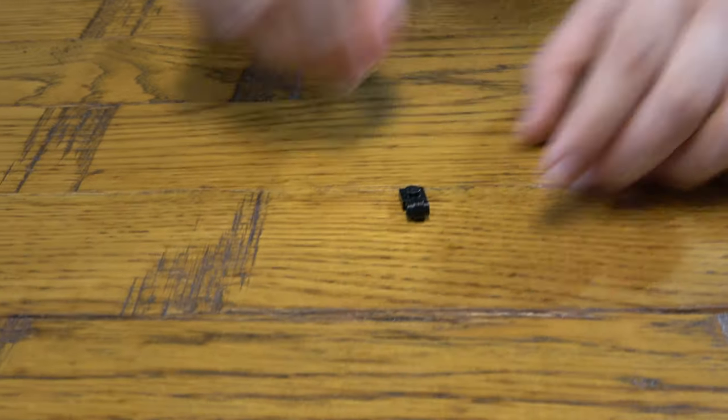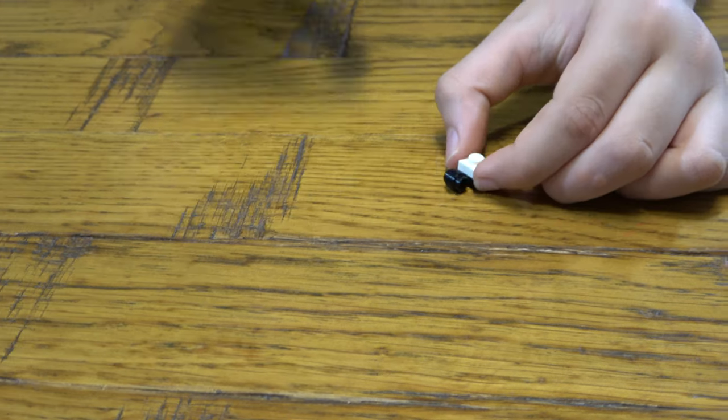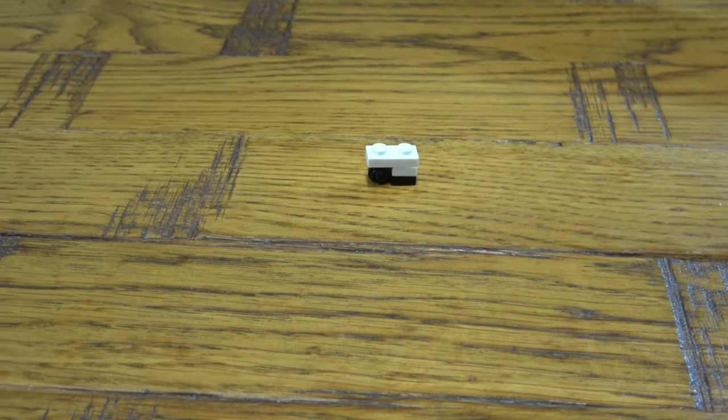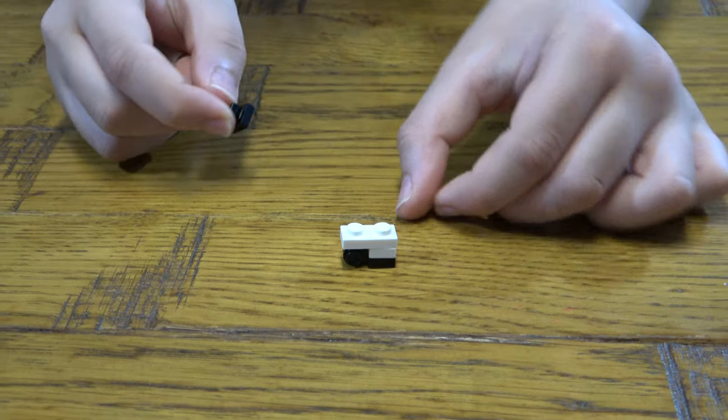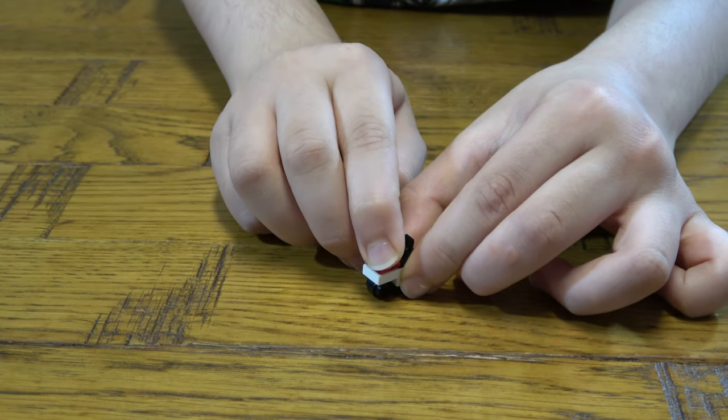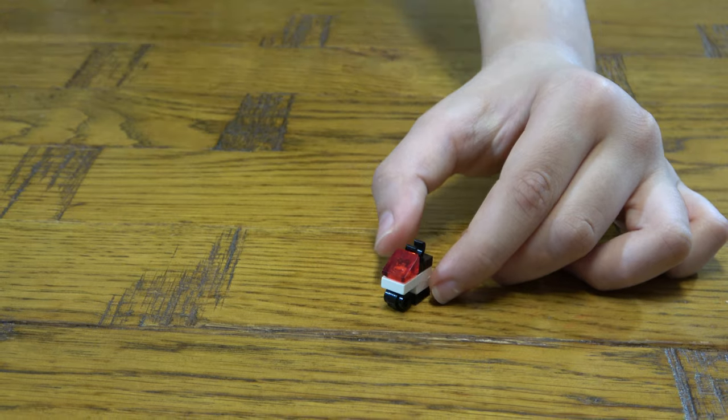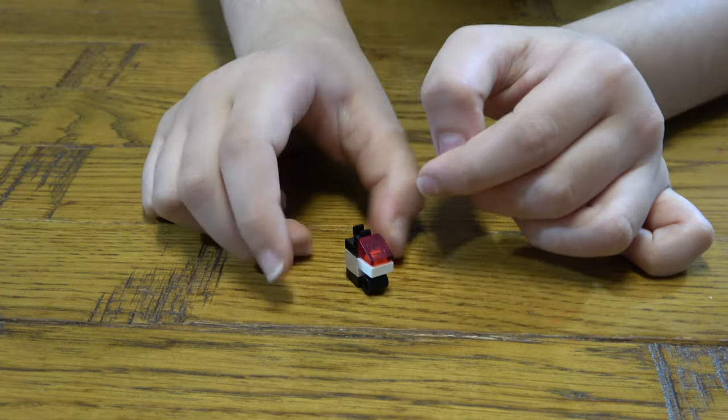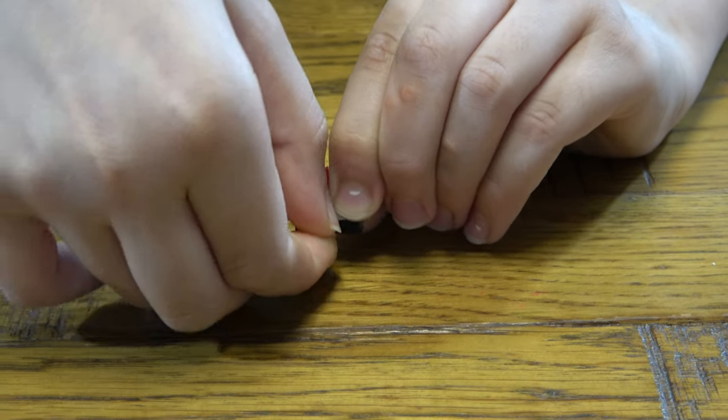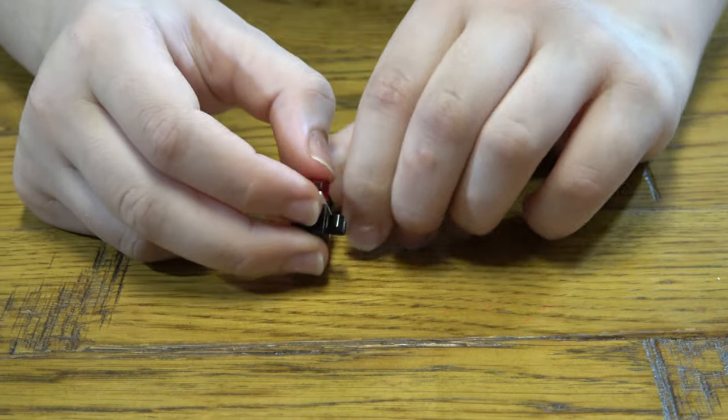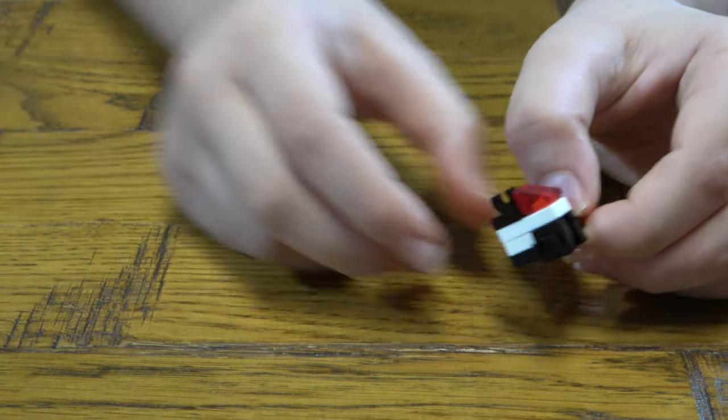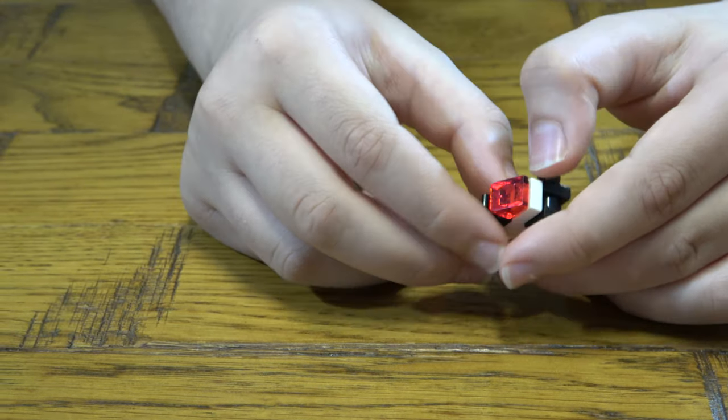First we're going to get this. Then next we get one of these one-by-ones, and then next we get one of these one-by-twos. Then one of these with a clip. Place that on like so. Then next you get this and then you place a clip like that, and then another clip like that. You're going to need two clips.